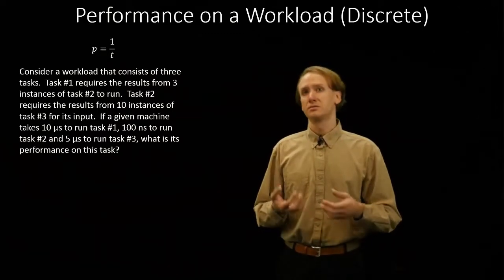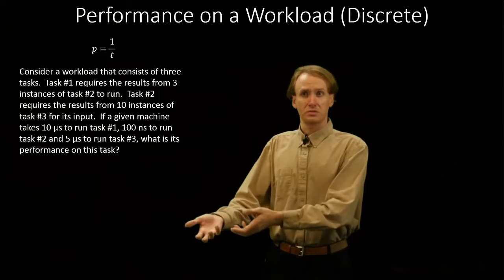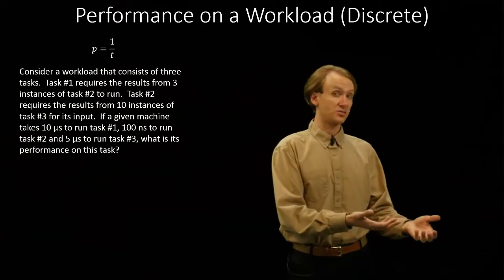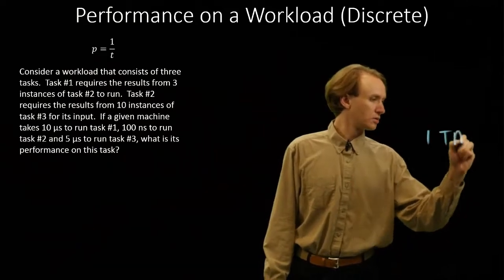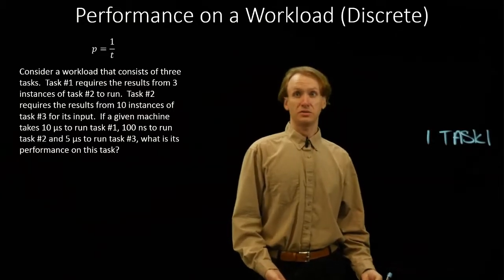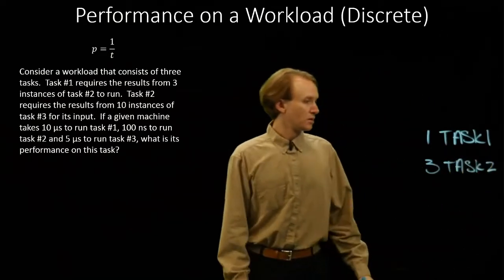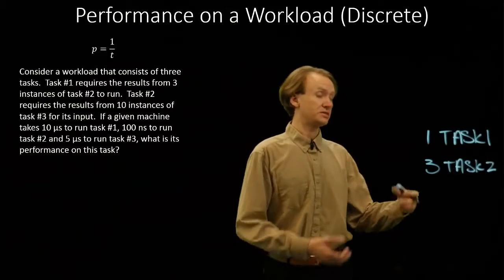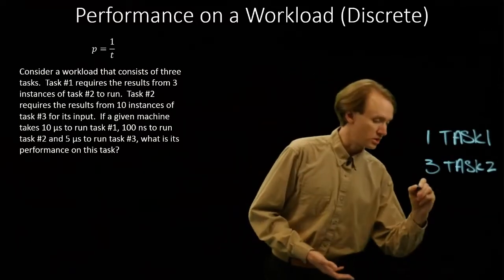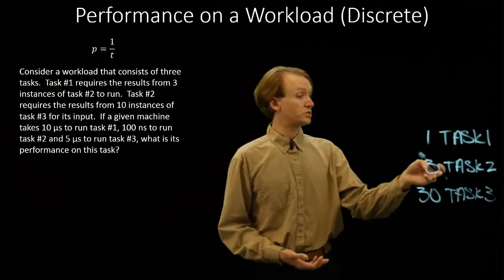But we need three instances of task 2 before we can start task 1. So in order to run task 1 we need three instances of task 2, and each one of those needs ten instances of task 3. So for one instance of task 1 we will need three instances of task 2. And for each instance of task 2 I need ten instances of task 3. So I need three times ten which will give me thirty instances of task 3. Ten for each instance of my task 2.